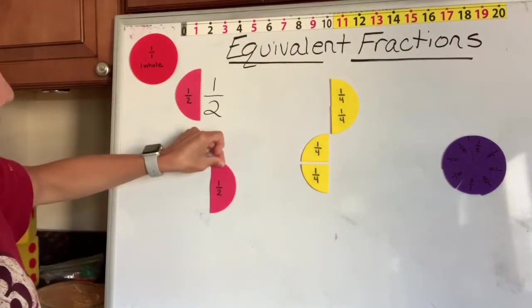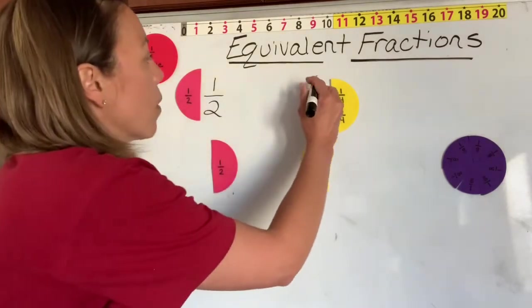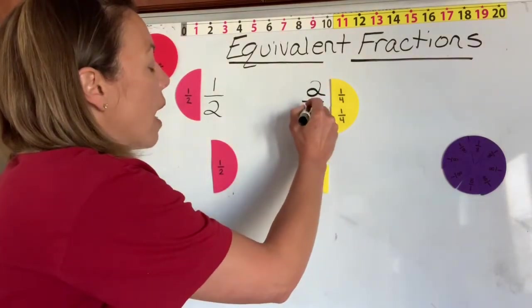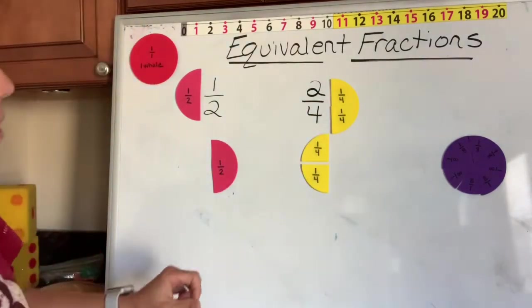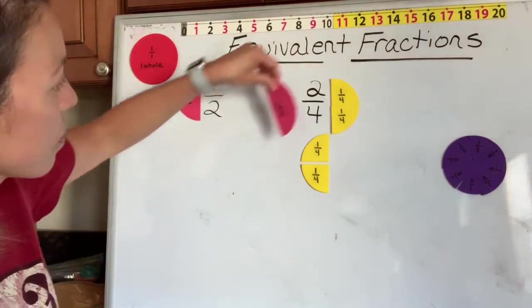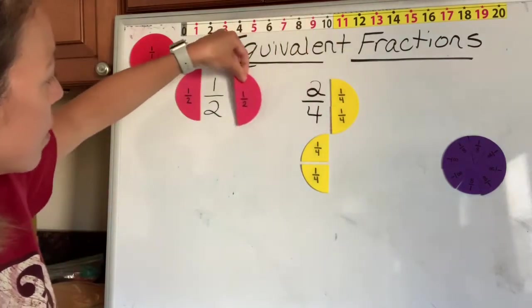So we know that two fourths, two out of the four pieces, is what it would take to be equal to a half. Very good.